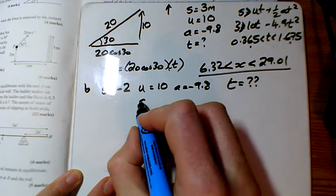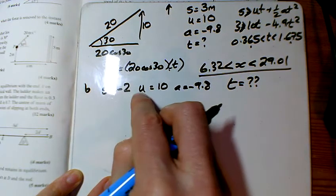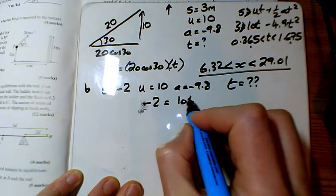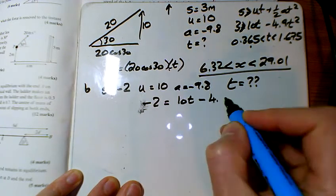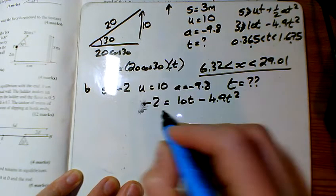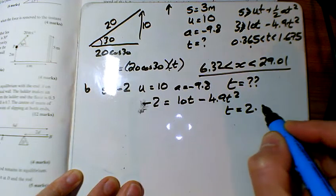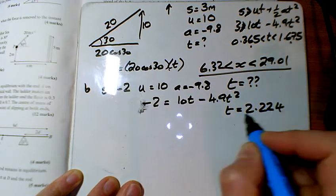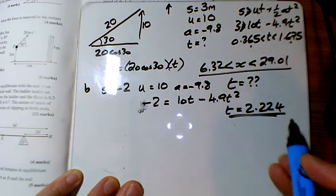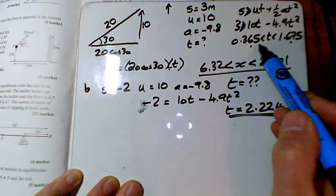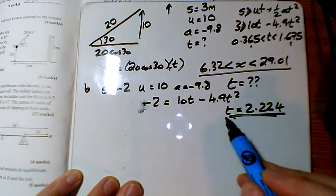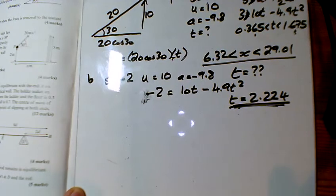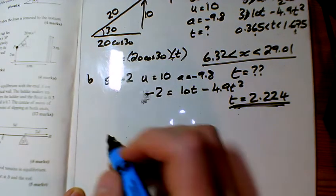Minus 2 equals 10 t minus 4.9 t squared. If I solve that quadratic, I find out it hits the ground after 2.224 seconds. Yeah, that's more than that one. 2.224 seconds is how long it takes till it hits the ground.